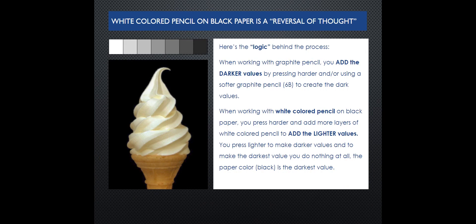Listen to this one - you might need to read this one more than once. Here is the logic behind the process. When working with graphite pencil, which is your regular pencil, you add the darker values by pressing harder and/or using a softer graphite pencil such as a 6B to create the dark values. When working with white colored pencil on black paper, you press harder and add more layers of white colored pencil to add the lighter values.